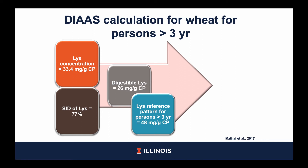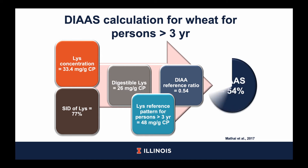The concentration of digestible lysine is then divided by the lysine reference pattern determined by the FAO for persons older than three years, which is 48 mg per gram of crude protein. When these two values are divided, the resulting value is the digestible indispensable amino acid reference ratio for lysine, which is 0.54. Since lysine is the first limiting amino acid in wheat, the DIAAS for wheat is 54%.